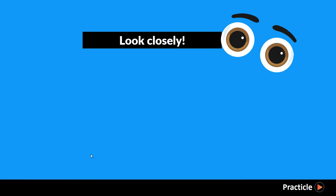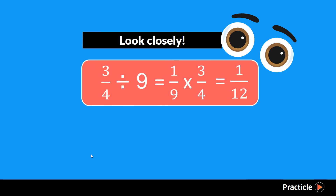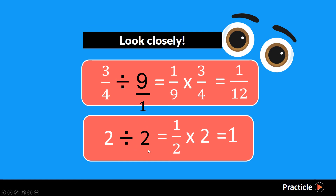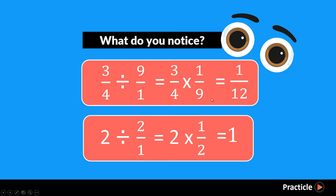Now it's time to move into the really exciting part. Let's study the previous two examples again and see what we can learn about dividing with fractions. Here's the first one and the second one. Since we want to see how to divide with fractions, let's change the whole numbers into their fraction forms: 9 is the same as 9 over 1, and 2 is the same as 2 over 1. When we arrange these fractions, 1 over 9 times 3 quarters is the same as 3 quarters times 1 over 9, and 2 times half is the same as half times 2. It's basically the same thing.